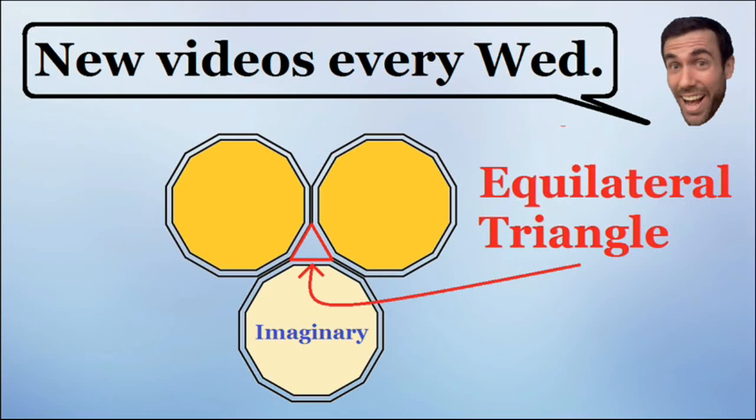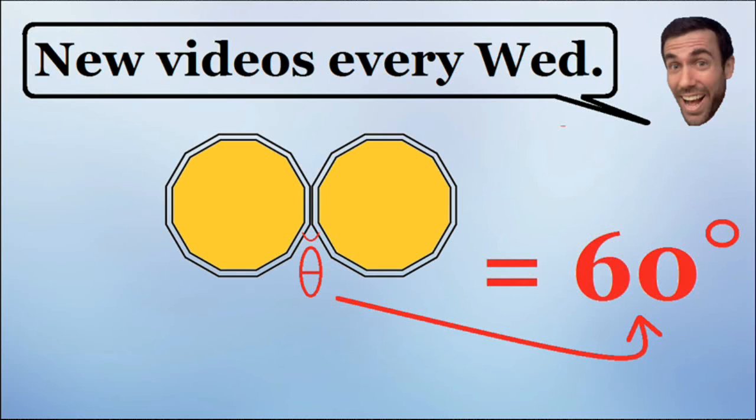We know this is an equilateral triangle because each side is exactly the same length. And we also know that every angle in an equilateral triangle is equal to 60 degrees.